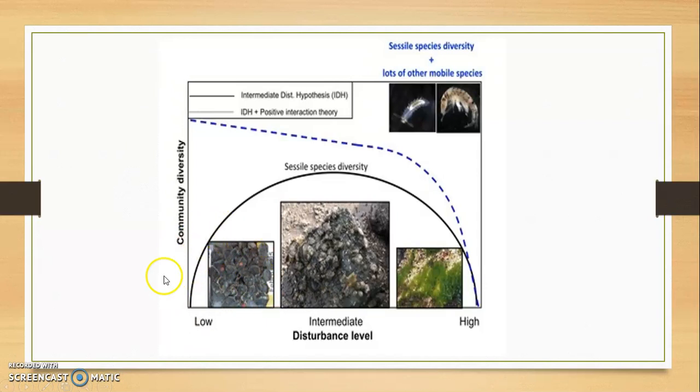These are the K selected species and at high intensity there will be R selected species. R selected species they have high clutch size or more clutch size.